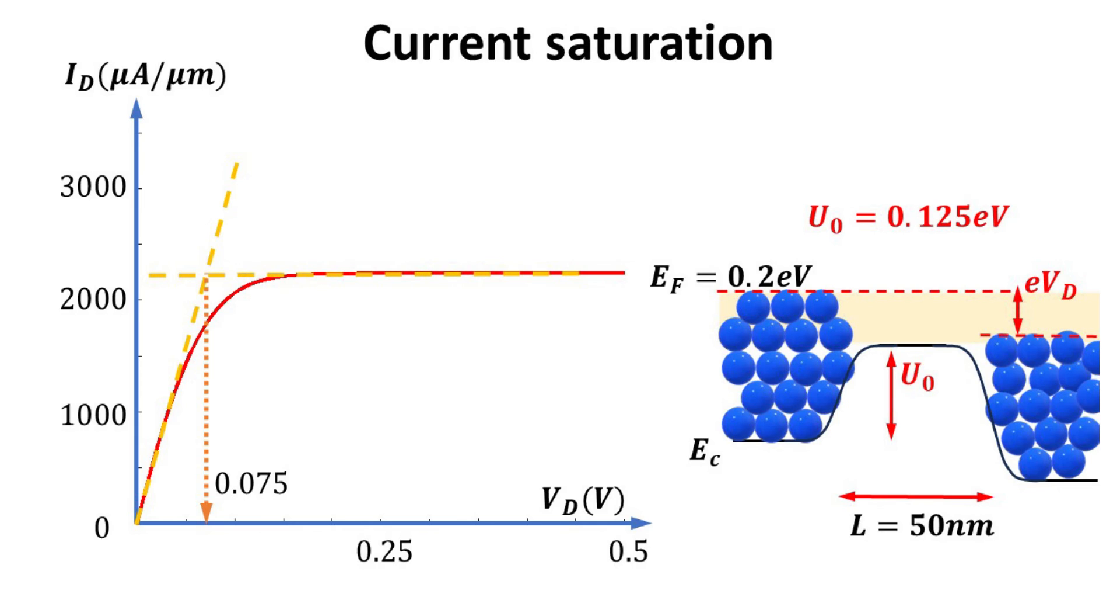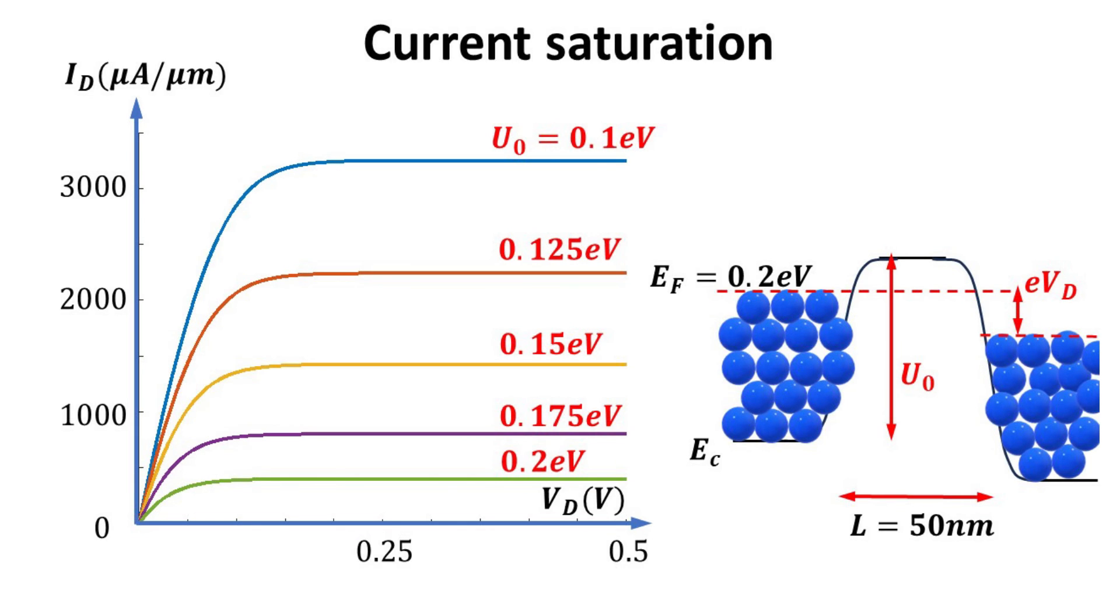We notice that the onset of saturation is around 0.075 volts, which coincides with the energy transport window above the barrier. Here, we generate the IV curves for different U0, which controls the onset of saturation and the saturation current, much like what one expects for classic MOSFET.